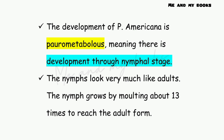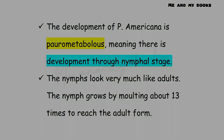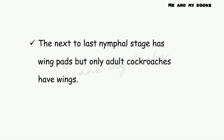The development of Periplaneta americana is paurometabolous, meaning there is development through a nymphal stage. The nymph looks very much like the adult. The nymph grows by moulting about 13 times to reach the adult form. The next-to-last nymphal stage has wing pads, but only adult cockroaches have fully developed wings.